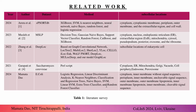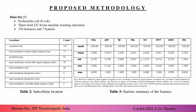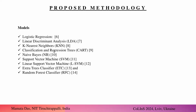The dataset was taken from the UCI Machine Learning Repository. It has 336 instances and seven features. Here we can see all eight locations of the E. coli bacteria with their counts. This table defines the seven features and provides a statistical summary of each feature with the corresponding locations.